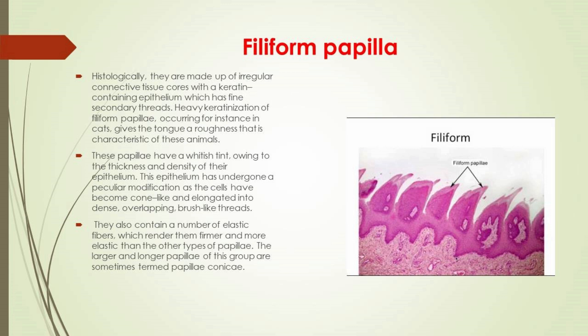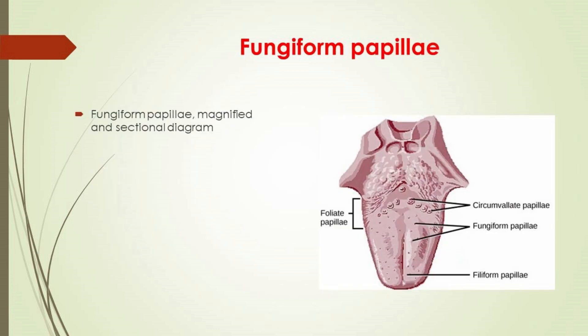Fungiform papillae are club-shaped projections on the tongue, generally red in color. They are found on the tip of the tongue, scattered among the filiform papillae, which are mostly present on the tip and sides of the tongue. Fungiform papillae have taste buds on their upper surface capable of distinguishing the five tastes: sweet, sour, bitter, salty, and umami. They have a core of connective tissue.